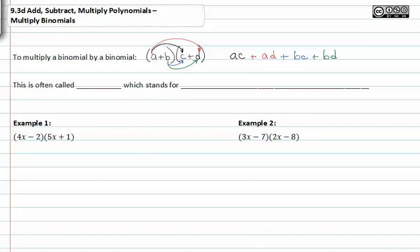This is often called FOIL. It's a way of remembering the order in which you multiply: first, outer, inner, and last.